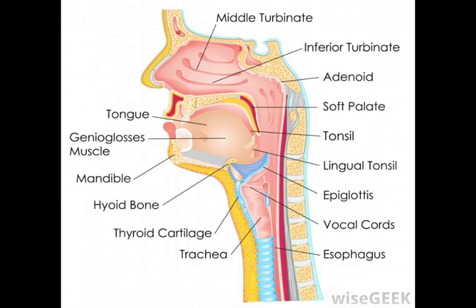It is also referred to as the coronoid process or coronoid process of the mandible. Thin and triangular, it derives its name from the Greek word koron, which means like a crown. This part of the mandible, however, is not as prominent as the mandibular condyle, which is thicker and larger.